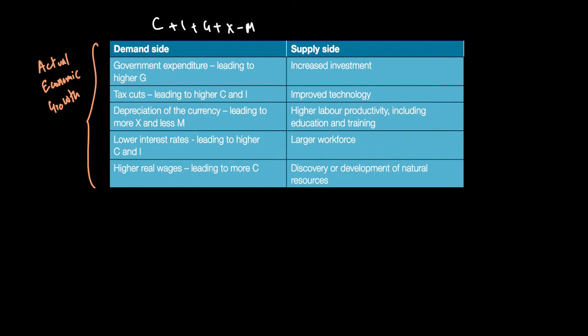Government expenditure can go up, leading to a rise in G. Similarly, if there is a reduction in taxes, this can lead to higher consumption or higher investment because disposable income will now go up because taxes like direct taxes are going down.